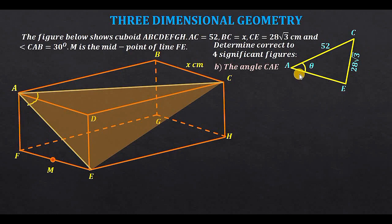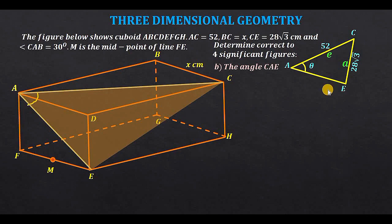We label sides opposite their respective angles with small letters. The side opposite angle A is labelled a, opposite angle E is e, and opposite angle C is c. The task is to determine side c, which is length AE. Once we have side c we can apply the cosine rule.